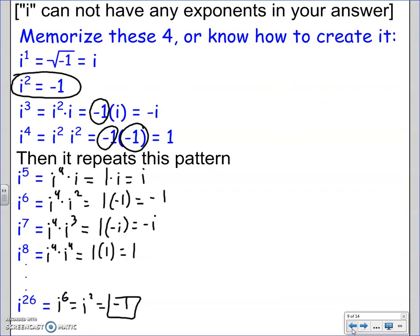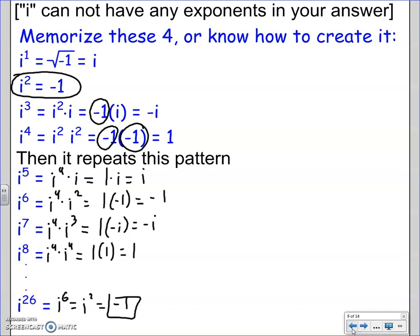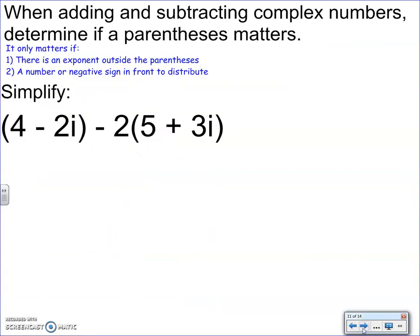And we have this list for, again, I squared is negative 1, that's the main fact. So when adding and subtracting, same thing as the operation of polynomials, determine if the parentheses matter. Again, it only matters if there's an exponent outside the parentheses, or a number or negative sign in front you need to distribute.